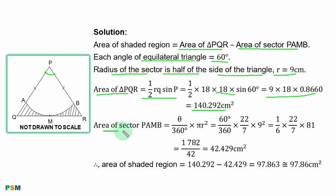Area of sector PAMB is given by this formula: theta, 60 degrees, over total angles in the circle, times π times radius squared, that is 9 squared. This expression reduces to this. When you multiply, you have this result. After division, you have 42.429 square centimeters.